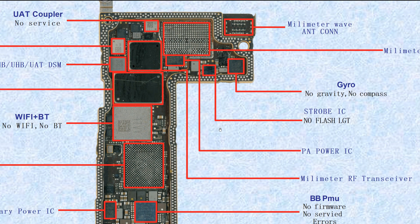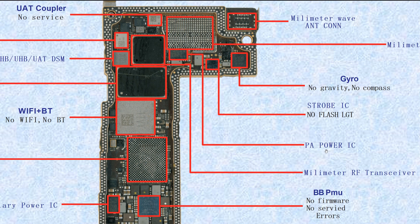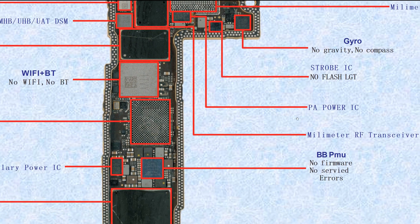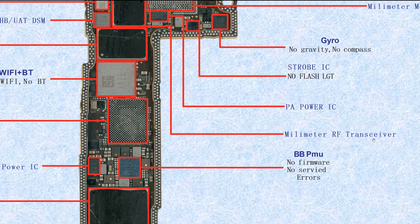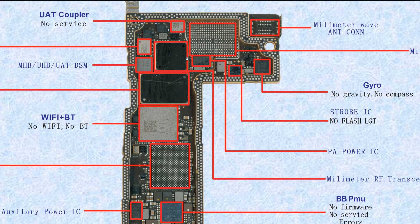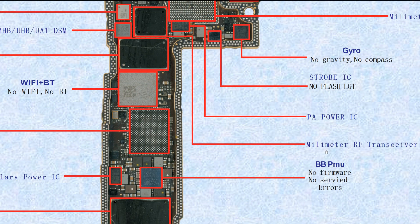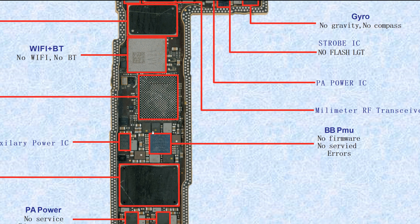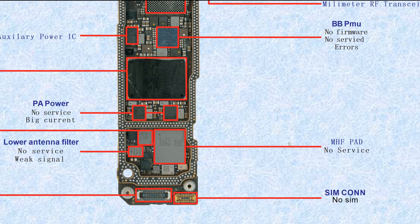This one is the PA — power IC. If broken, it causes no service or searching. This one is the millimeter wave RF transceiver. If broken, it causes no 5G. This one is the BBPMU — baseband power management unit. If broken, it causes no firmware, no service, or errors.